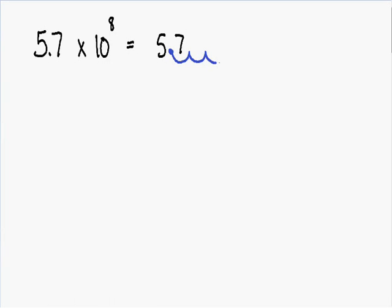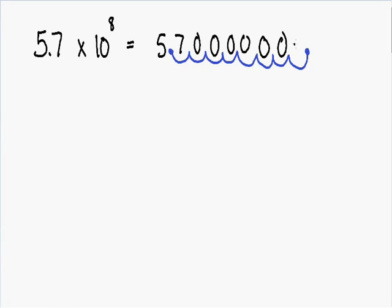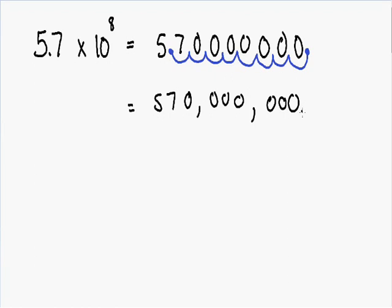Let's take our decimal point and move it 8 times to the right: 1, 2, 3, 4, 5, 6, 7, 8. Our new decimal point is going to be right here. After you move the decimal point, you need to fill in zeros in all of the empty spaces. So our final answer after we move the decimal point is 570 million. The decimal point is all the way on the right, which is unnecessary, so we don't write it. So 5.7 times 10 to the 8th equals 570 million.